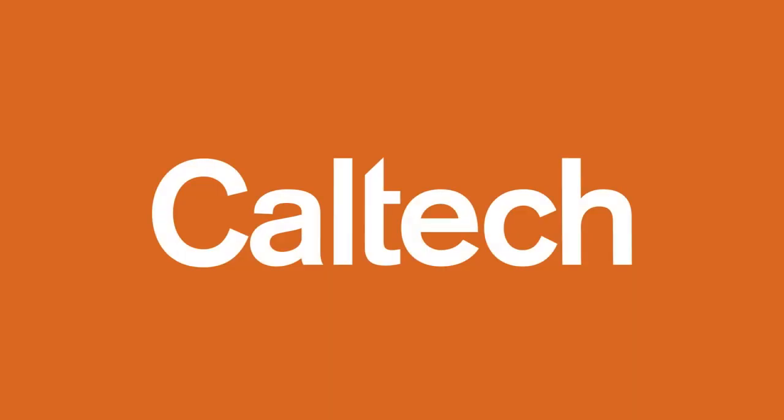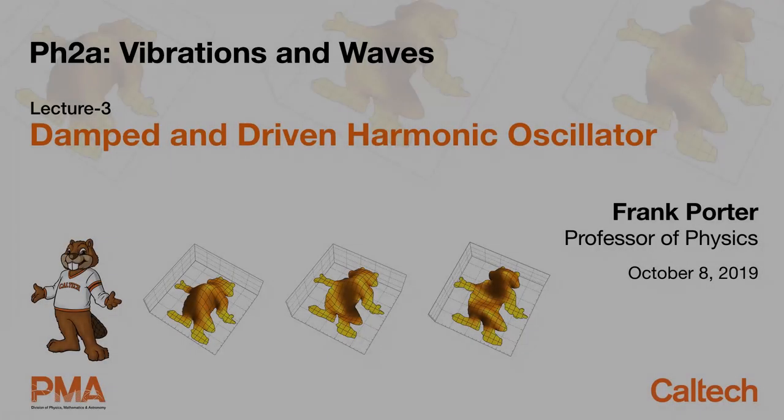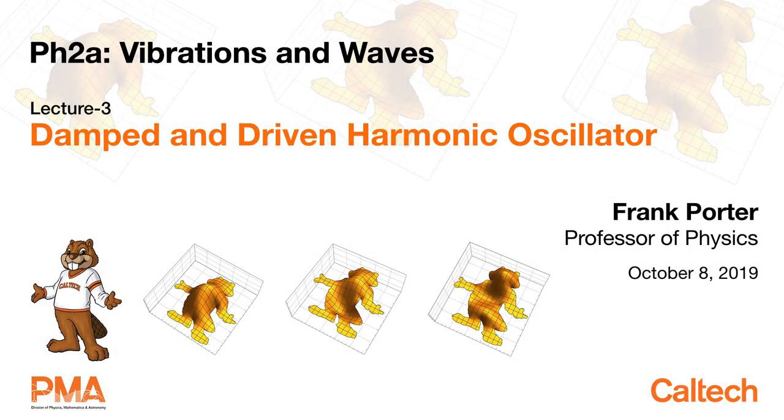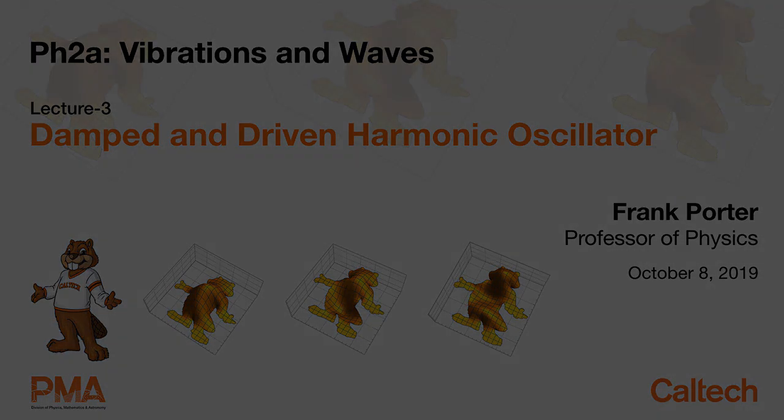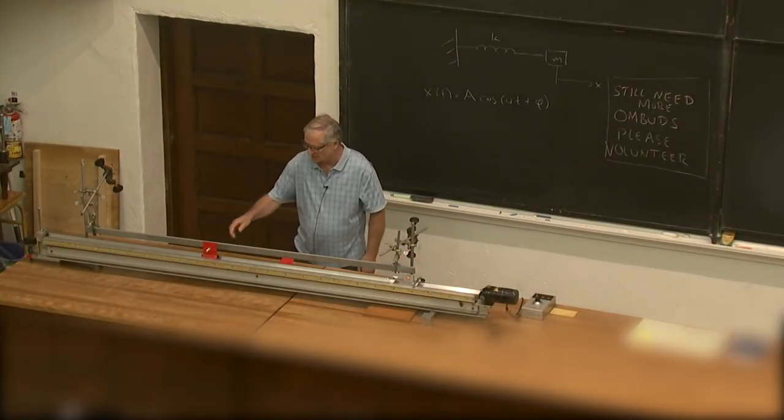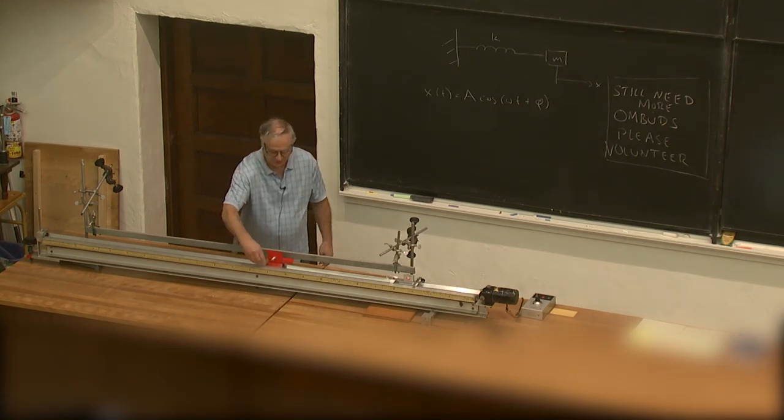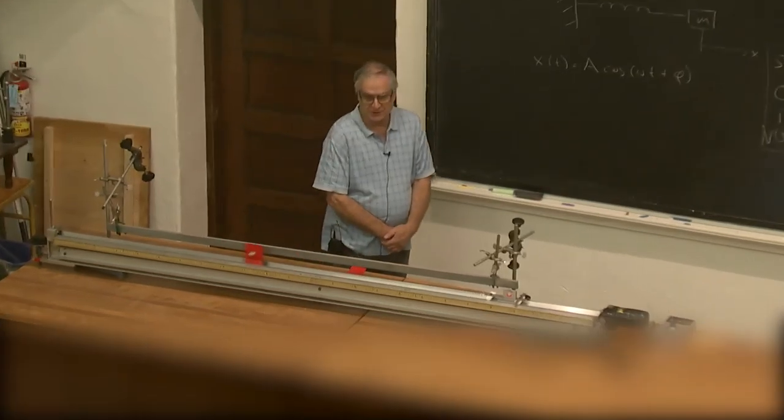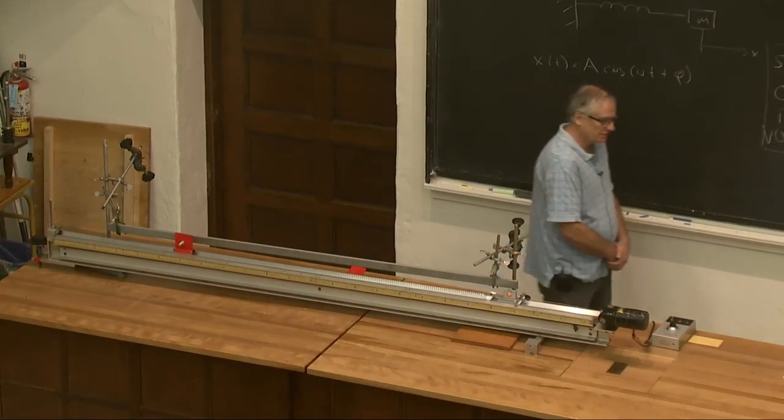Presented by Caltech. So, we're doing simple harmonic motion. For example, the mass on the spring that we analyzed already.